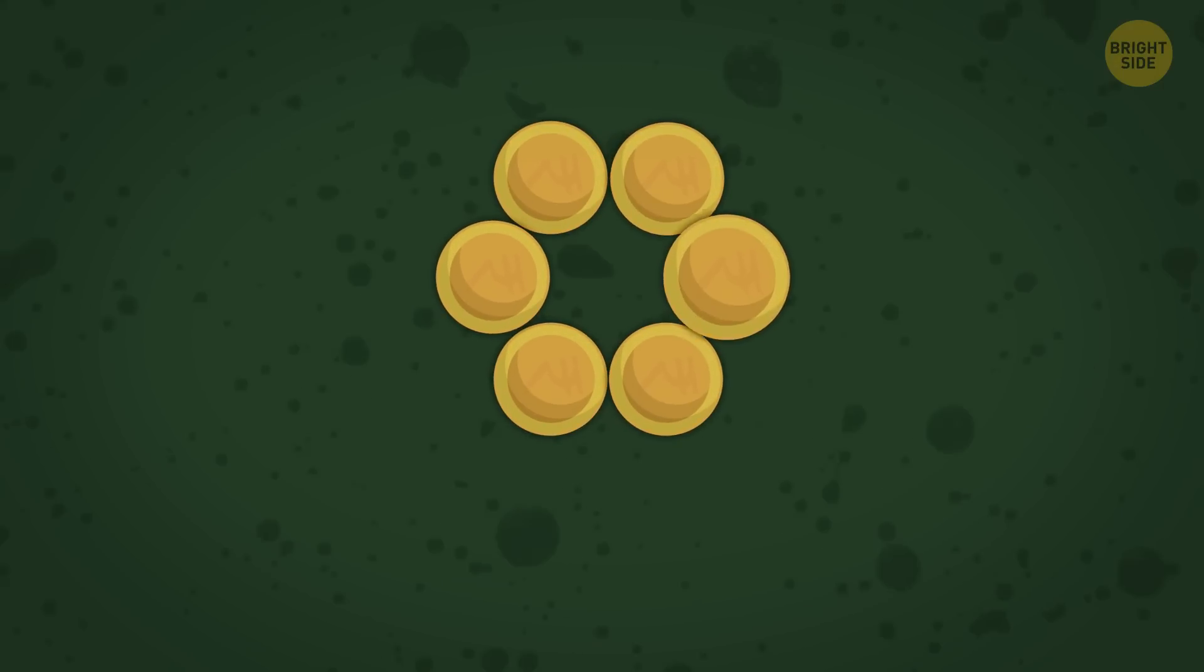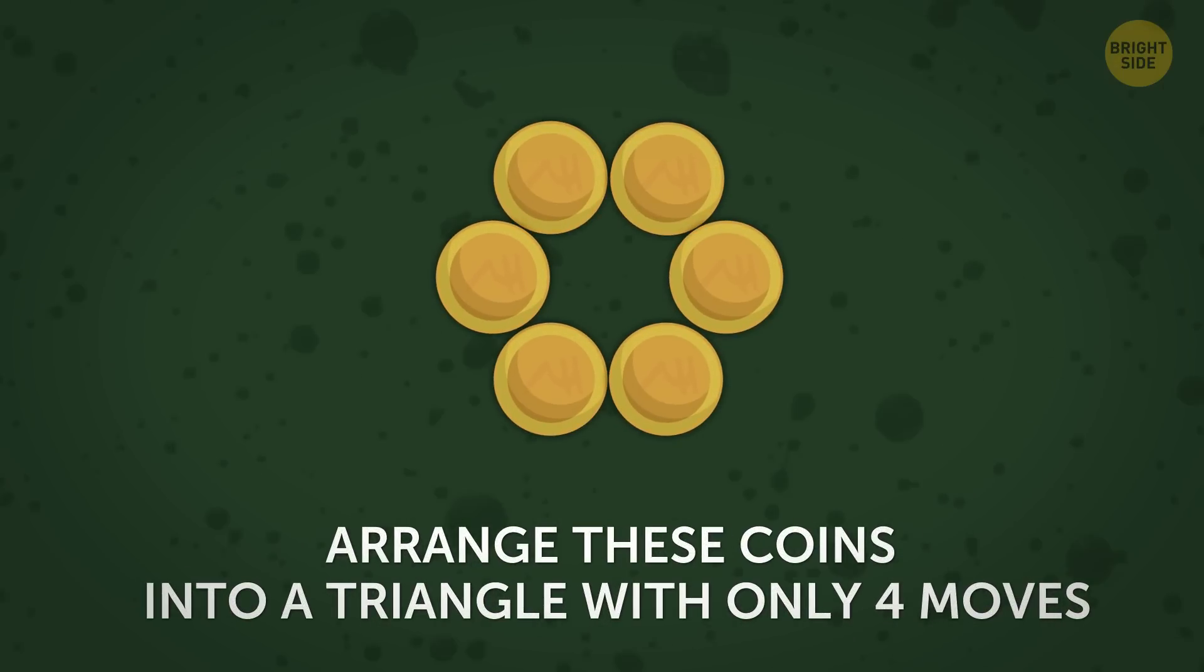Here's another riddle with a hexagon shape. The task is to arrange these coins into a triangle with only 4 moves. The rules are the same. Every move should consist of sliding just 1 coin to a new location where it touches at least 2 other coins. Are you ready? Let's get started.